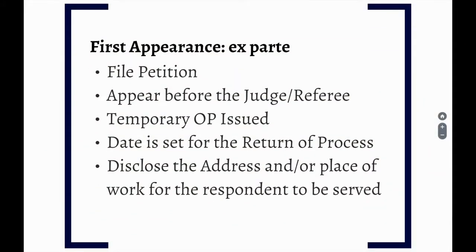When the petitioner files a family offense petition, the first appearance occurs on the same day the petition is filed. This appearance is an ex parte hearing, meaning the petitioner appears before a referee or judge without the respondent present. The judge or referee will review the petition and decide whether to issue a temporary order of protection and what terms will be part of the OP. The judge or referee will usually ask the sheriff to serve a copy of the OP and petition on the respondent for free, if they have the respondent's address. If not, they may ask the petitioner to arrange for service. The judge or referee will also pick another date, called the return of process date.